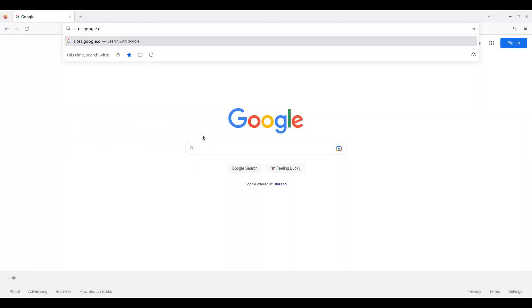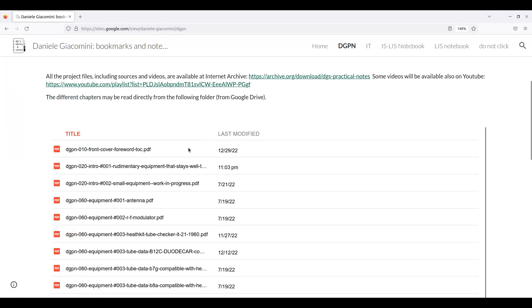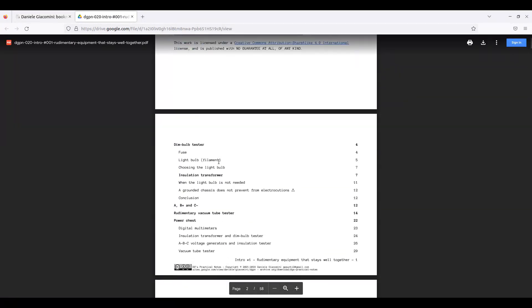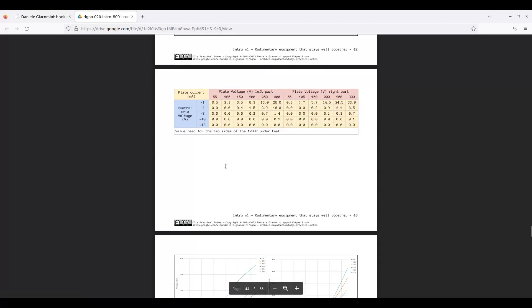This video is part of the introductory chapter describing some minimal equipment, starting from an insulation transformer and a dim bulb tester. This video only shows how a basic vacuum tube curve tracer could be built.